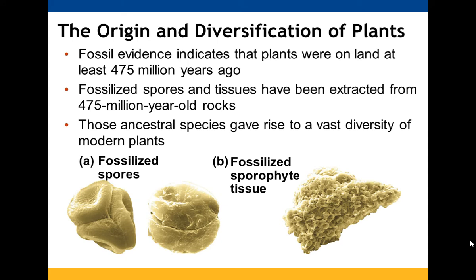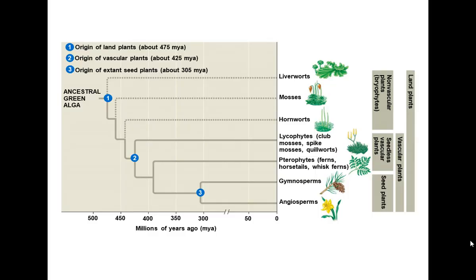Fossil evidence shows that plants have been on land for at least 405 million years, found in rocks. The small number of ancestral species that existed gave rise to all the different plants we have today.